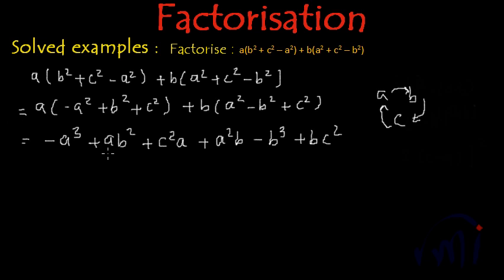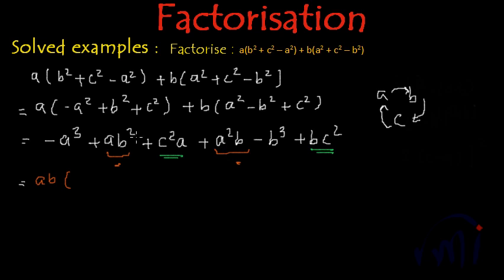Here we have terms in AB, and here we have terms in C squared. Let's take AB common from those two terms — we get AB multiplied by A plus B. Then from the C squared terms, we take C squared common and again get A plus B inside the bracket, giving plus C squared multiplied by A plus B.